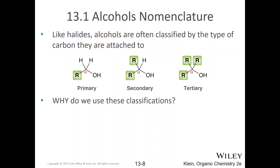Like halides, alcohols are often classified by what type of carbon they're attached to. The carbon that the functional group — in this case the hydroxyl — is attached to is called the alpha carbon. If the alpha carbon has only one alkyl group on it, it's called primary. If it's got two alkyl groups, it's called secondary. And if it's got three alkyl groups on it, it's called tertiary.